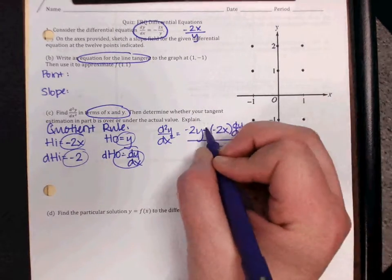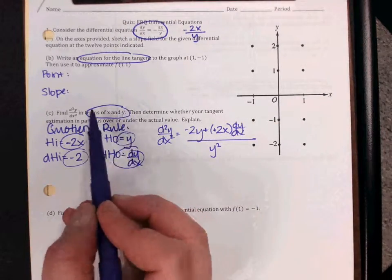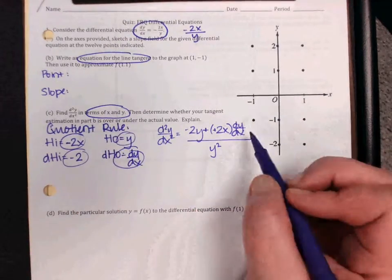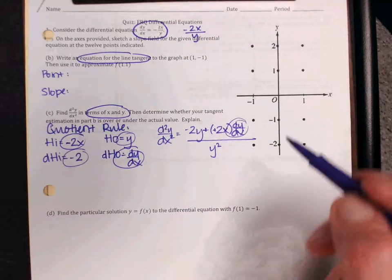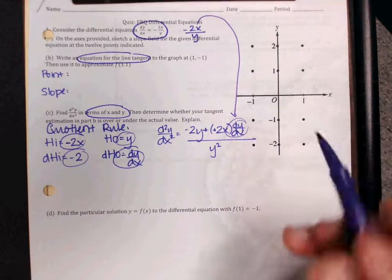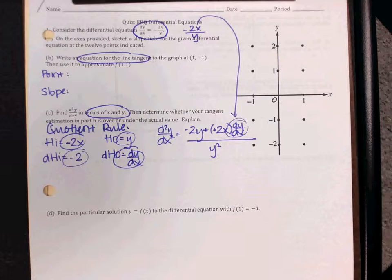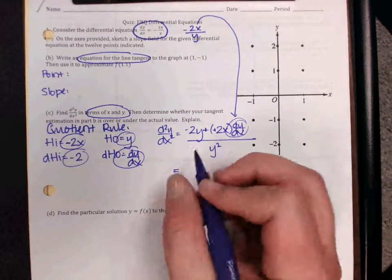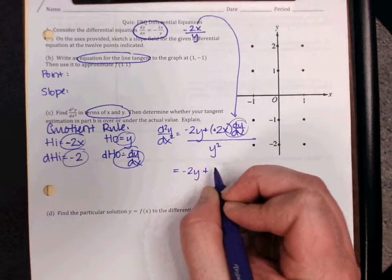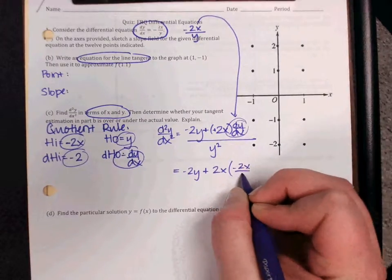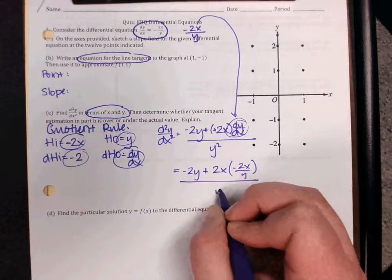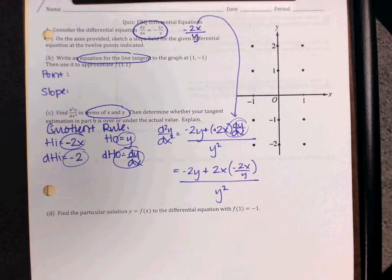Now I would change this double negative here to both be a plus, and then remember to meet the in terms of x and y expectation, we need to switch that dy dx out for what the original was, which was negative 2x over y. So I'm going to rewrite this as negative 2y plus 2x, negative 2x over y, y squared. And remember, you can leave it just like that.